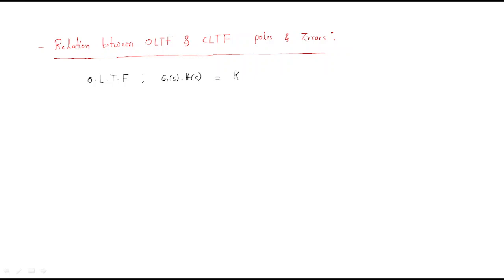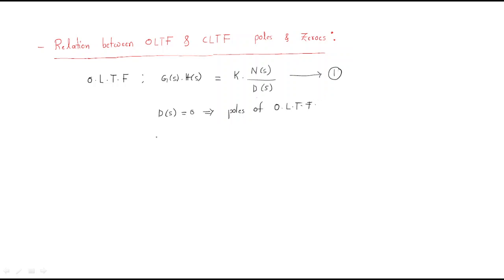We write the open-loop transfer function in the form of numerator N(s) over denominator D(s). When D(s) = 0, we get the poles of the open-loop transfer function. When N(s) = 0, we get the zeros of the open-loop transfer function.